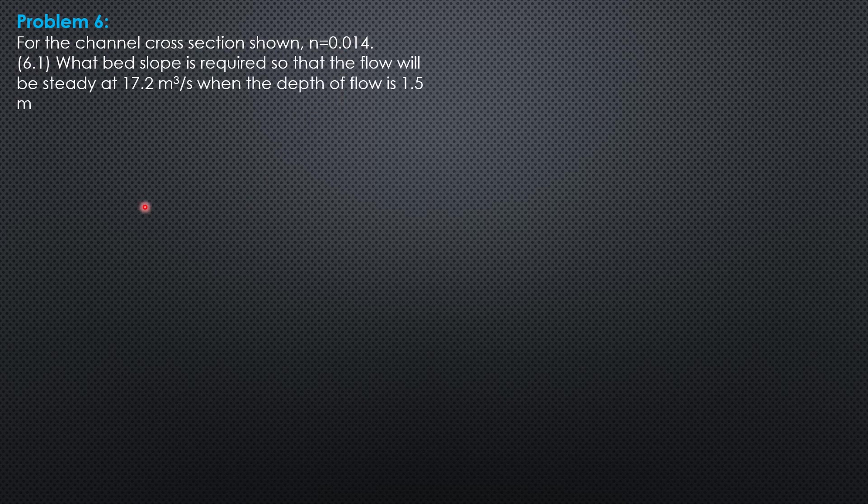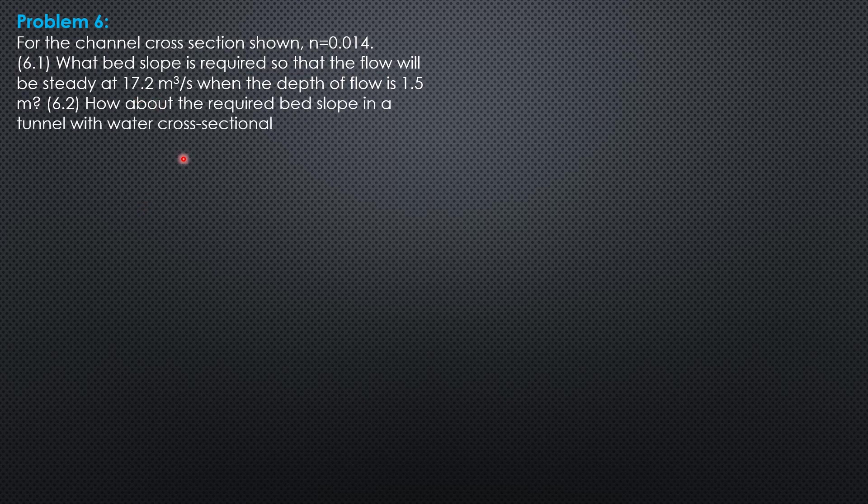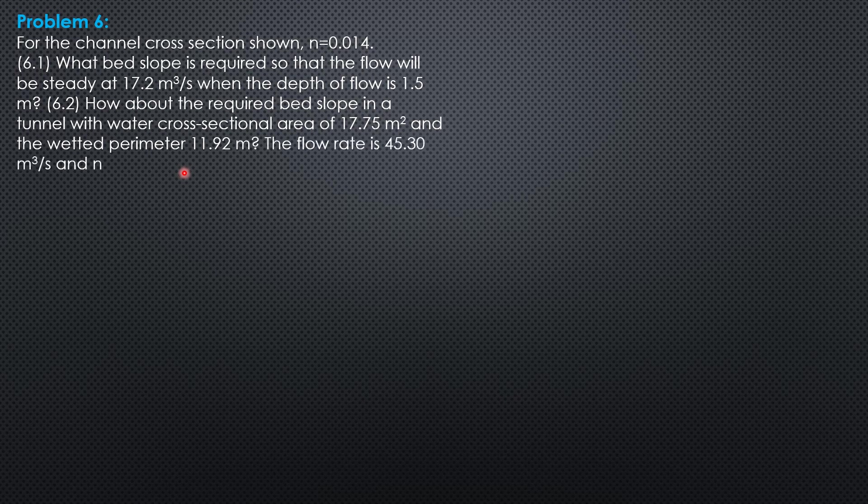What bed slope is required so that the flow will be steady at 17.2 cubic meters per second when the depth of flow is 1.5 meters? How about the required bed slope in a tunnel with water cross-sectional area of 17.75 square meters and the wetted perimeter 11.92 meters?